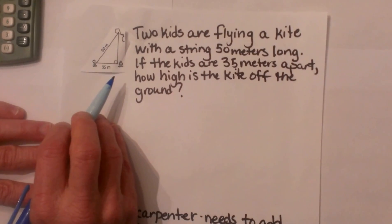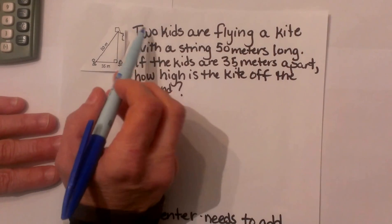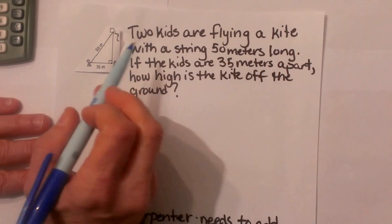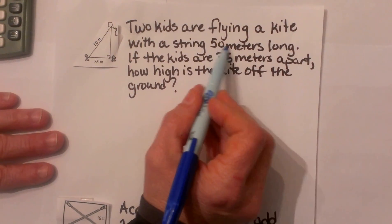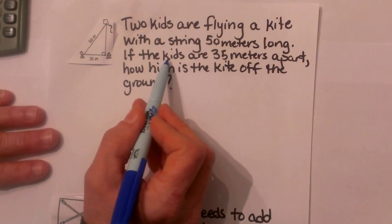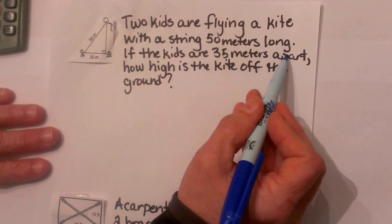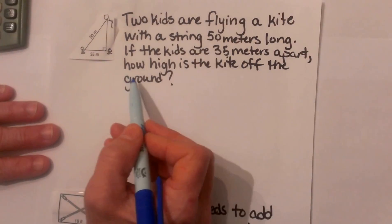We are going to work on some Pythagorean theorem word problems. The first one is two kids are flying a kite with a string that is 50 meters long. If the kids are 35 meters apart, how high is the kite off the ground?